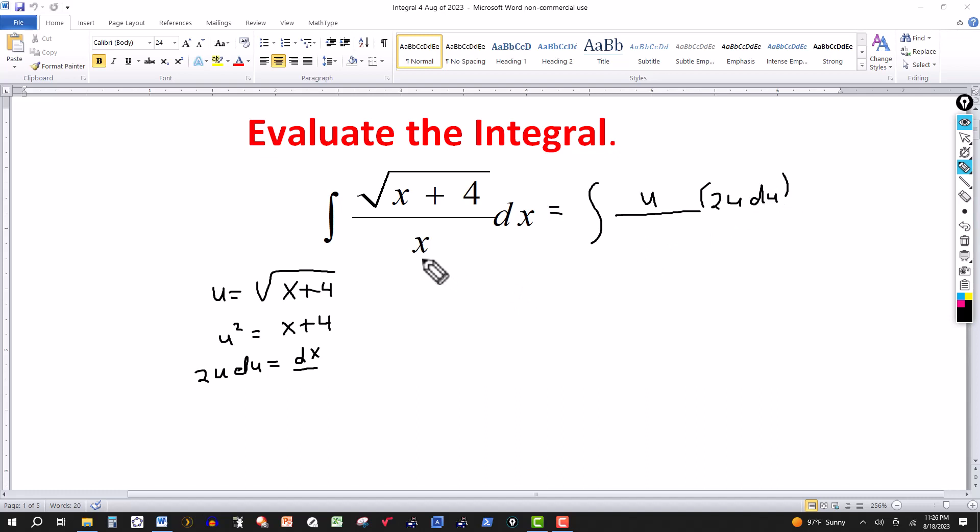And then in the denominator we have an x. We need a substitution for x, so let's go ahead and look at this one right here and we write this as u squared. Take the 4 over, minus 4, and then this will be equal to x.